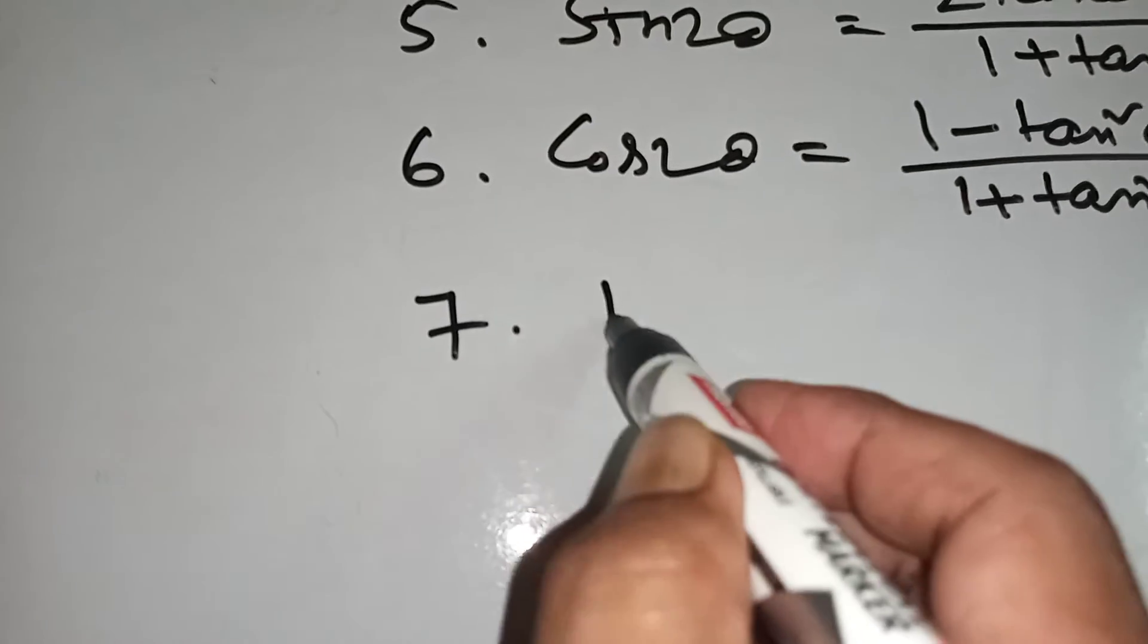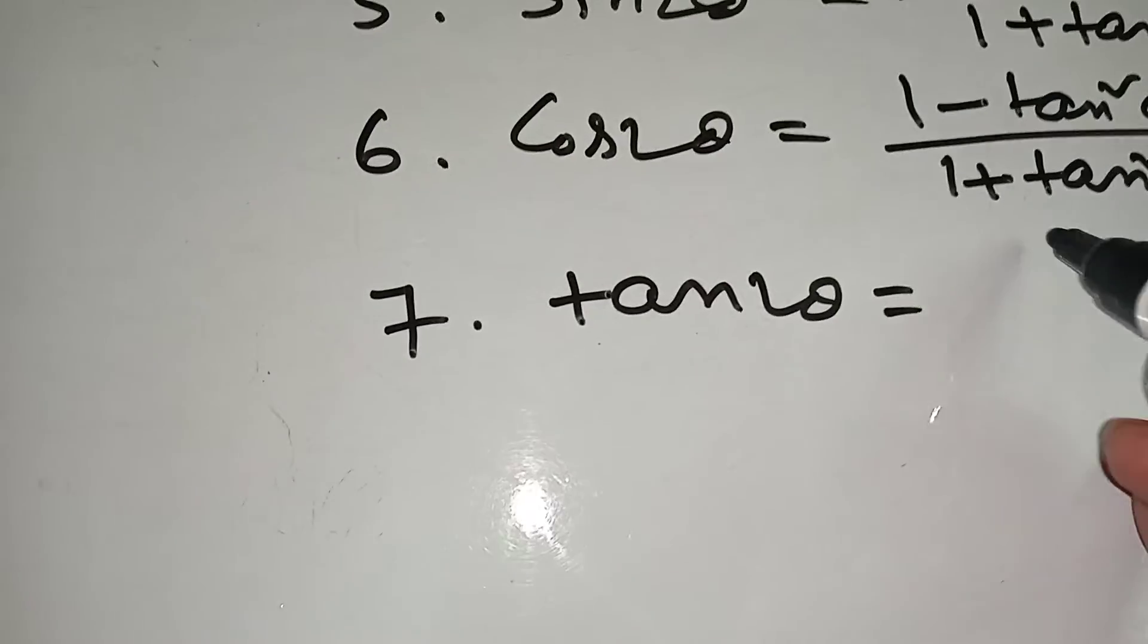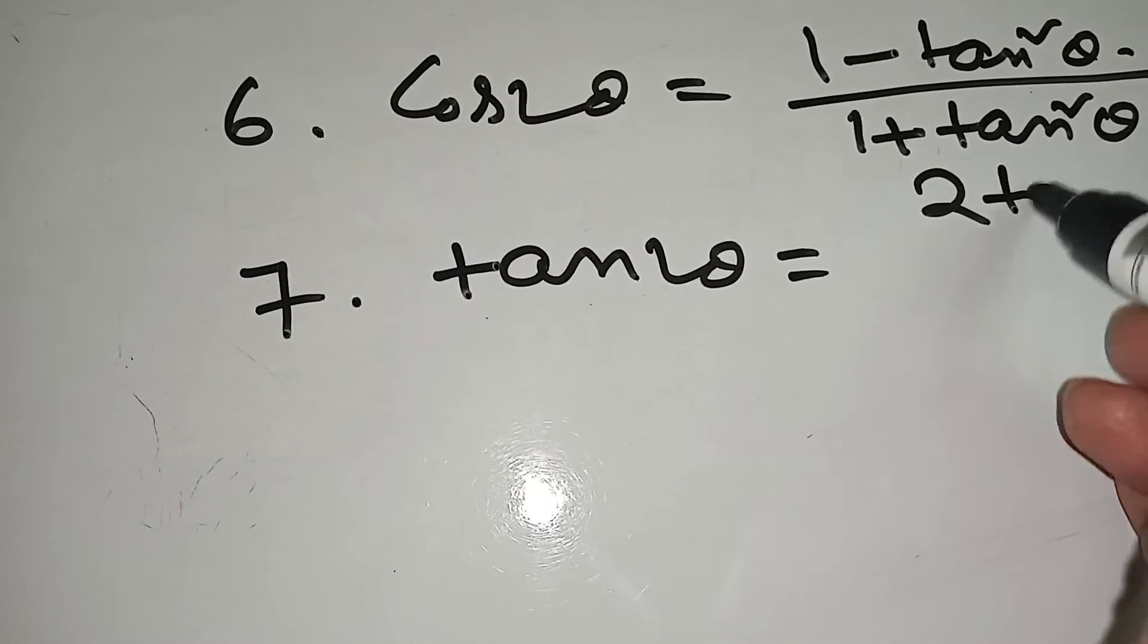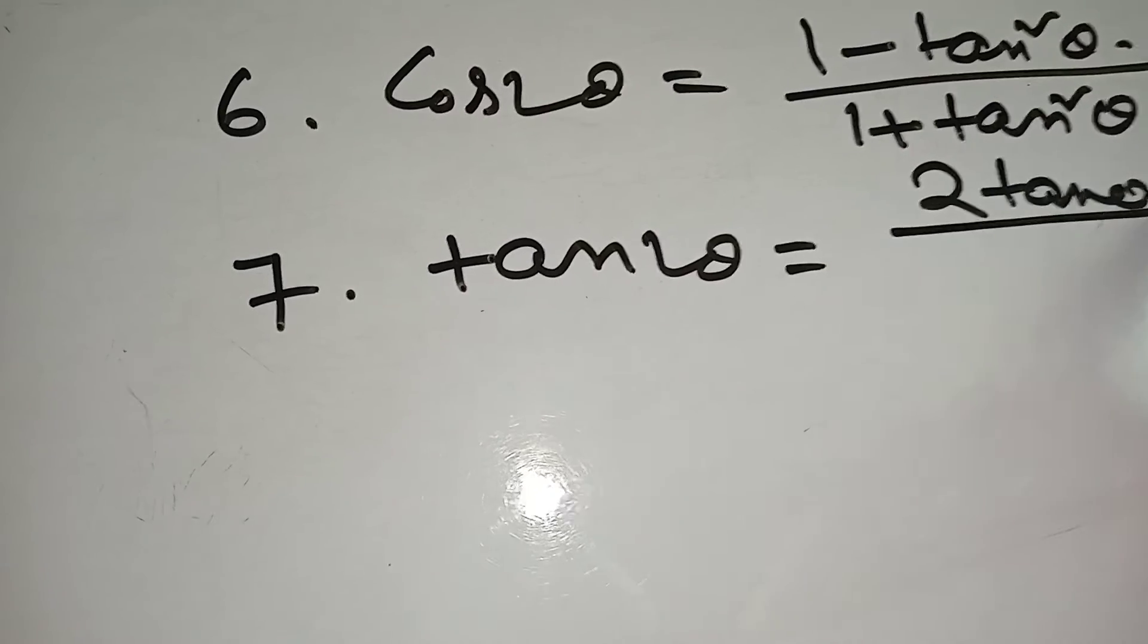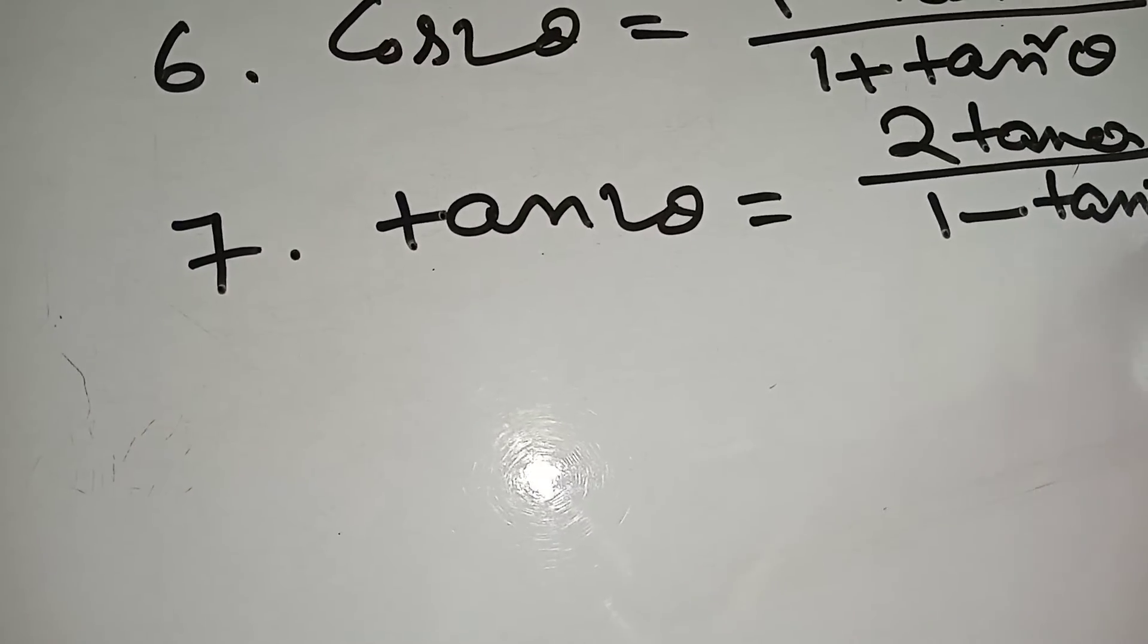Number 7: tan 2 theta equal to 2 tan theta by 1 minus tan square theta.